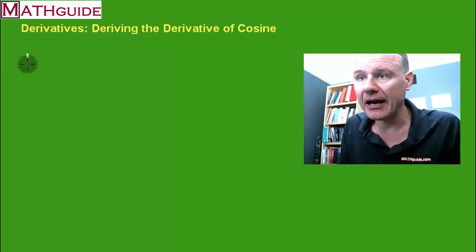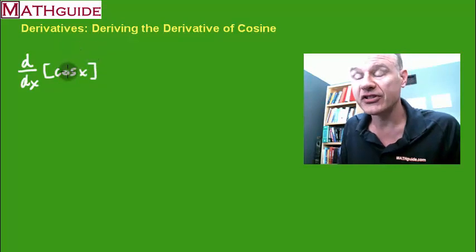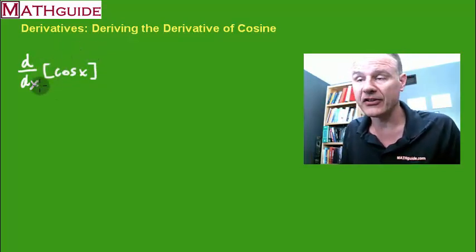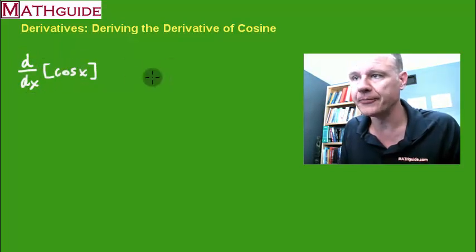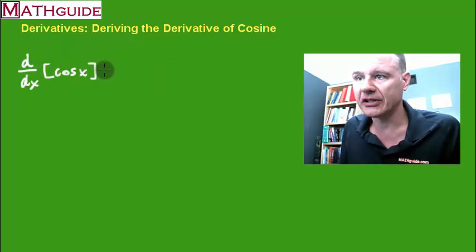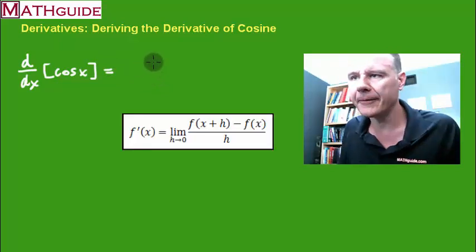Let's take a look at how you could write this. Here's some old-school writing, but if you're going to take the derivative of the cosine function, this is sometimes how it's written: the derivative with respect to x of the function.